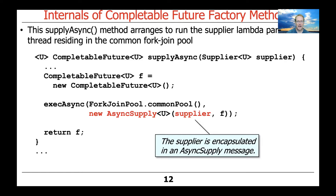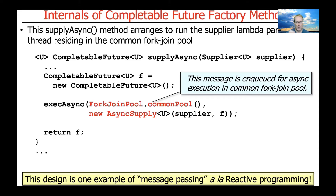The supplier goes into that AsyncSupply object. Then we take the AsyncSupply object and enqueue it for subsequent asynchronous execution in the common fork-join pool by calling the execAsync method, passing it the message that encapsulates the supplier lambda and a reference to the common pool from the fork-join pool framework. That's a good example of message passing — exactly what the reactive programming paradigm means when it says reactive programs should be message-driven. We're making a message and queuing it up for later execution in a different context.